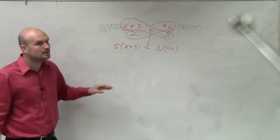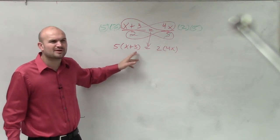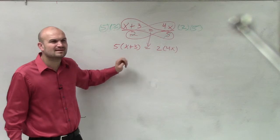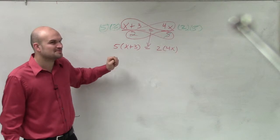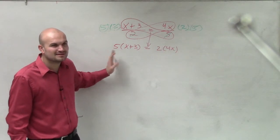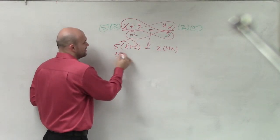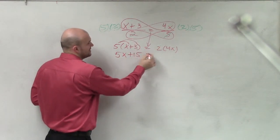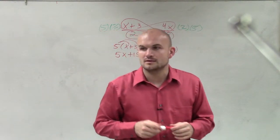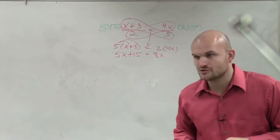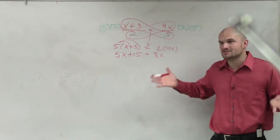So now, Oscar, what would be the next step over here? Which property would I have to use? It starts with a D — rhymes with distributive property. So I'd have to apply the distributive property all the way through, giving me 5x plus 15 equals 8x. Now Samantha, what would be my next goal in solving this equation? How would I solve for x now?